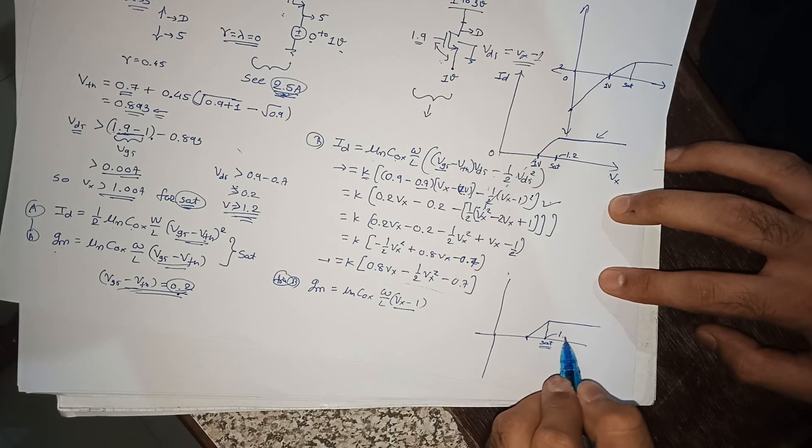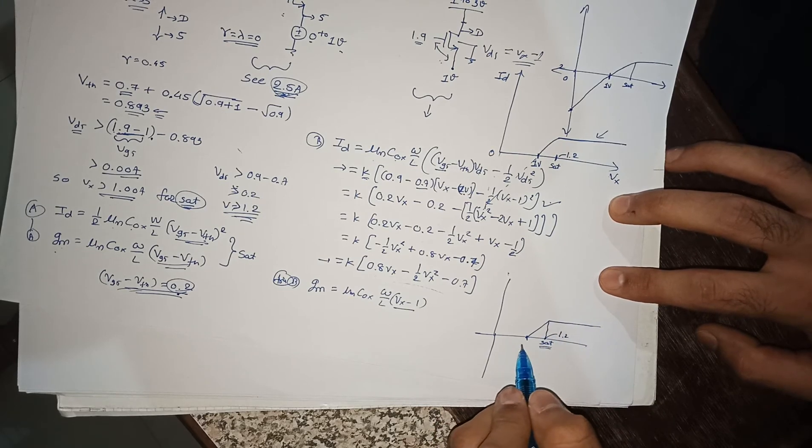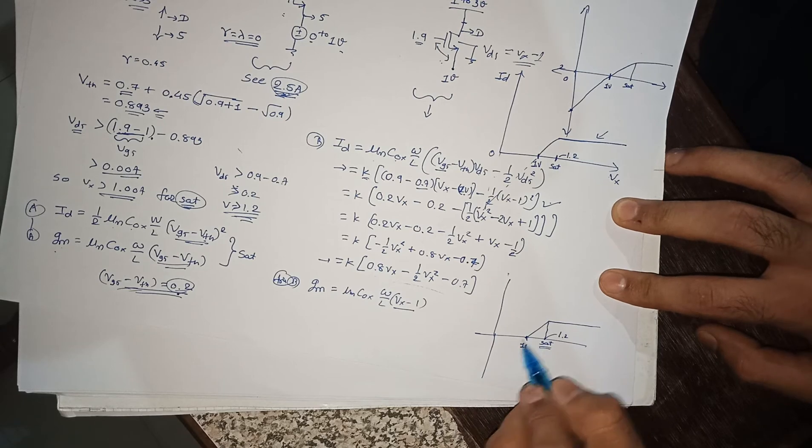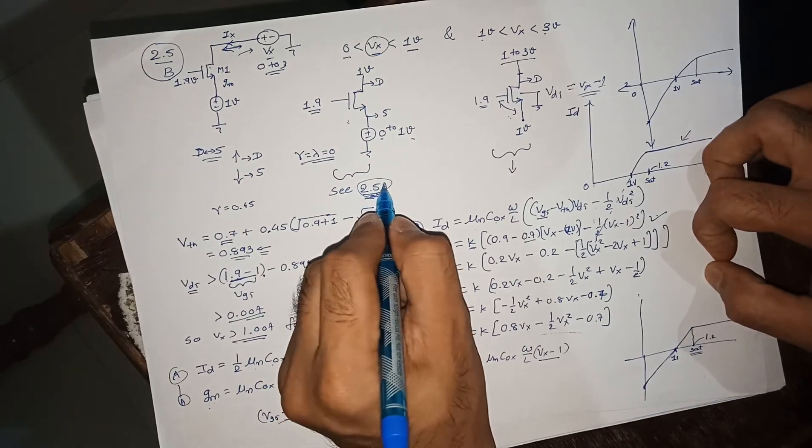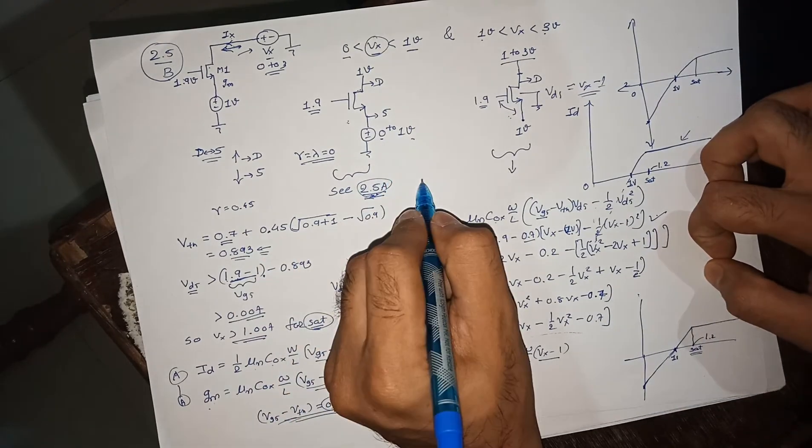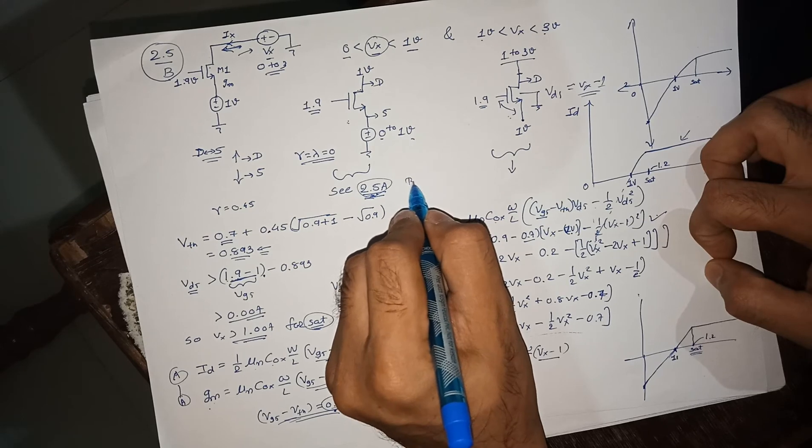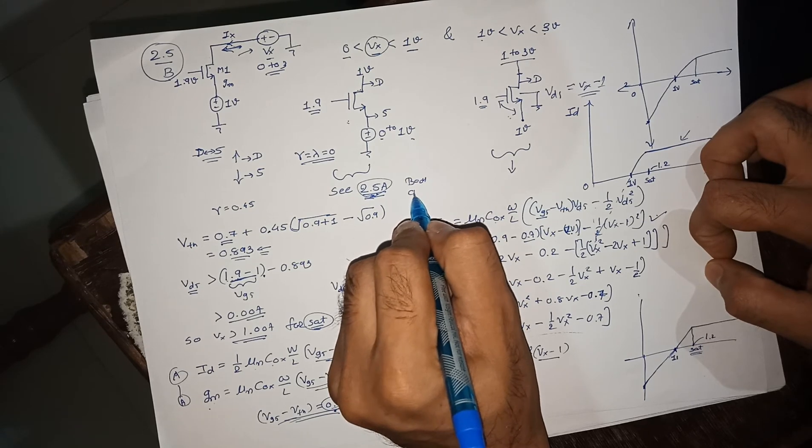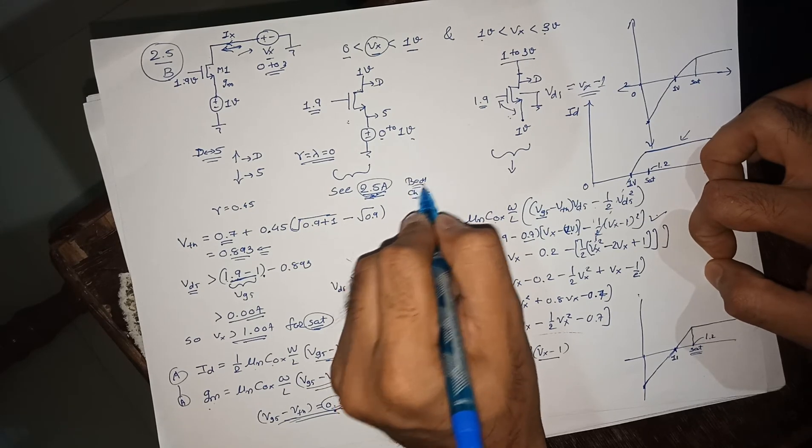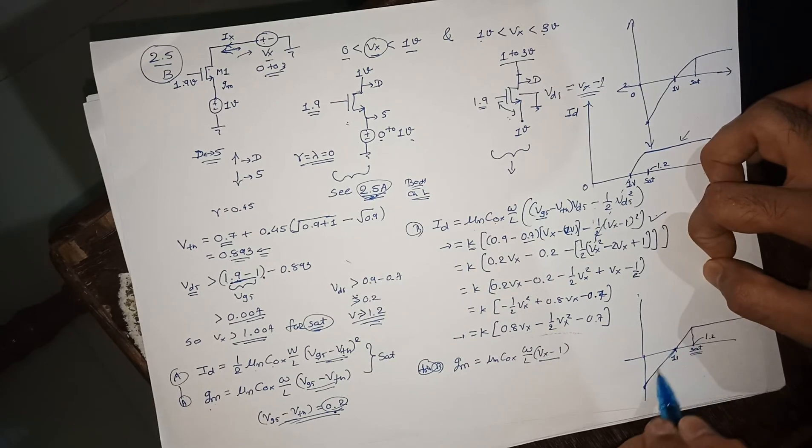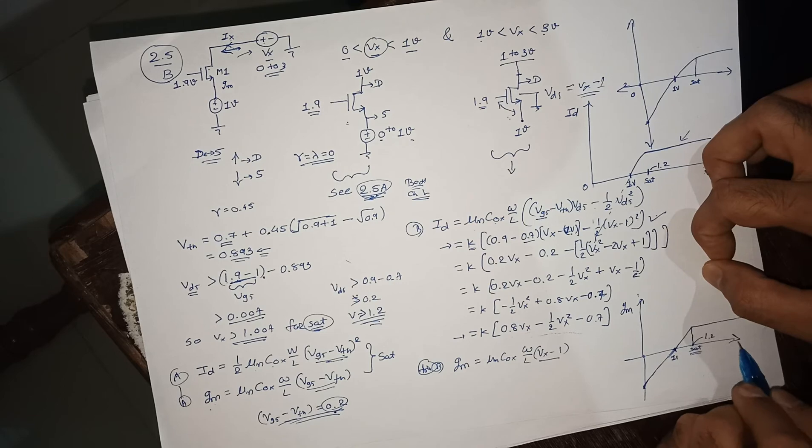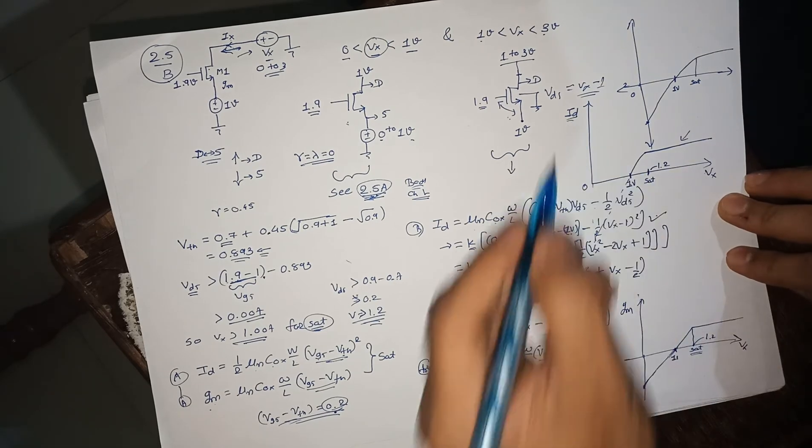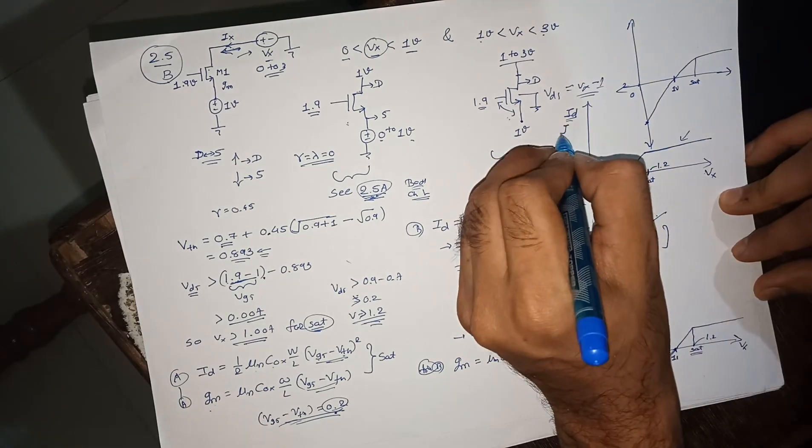This is 1 volt and it will follow somewhat a straight line. One more important thing: in video 2.5 part A, I considered body effect as well as channel length modulation also. If you are neglecting that, your line will be very straight here for gm. This is gm versus VX, this ID versus... this is actually IX versus VX.